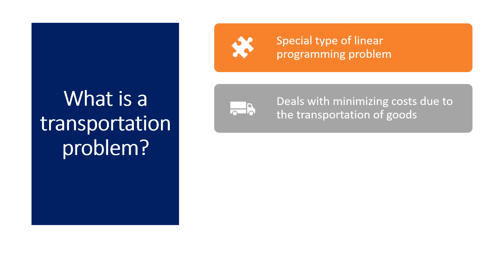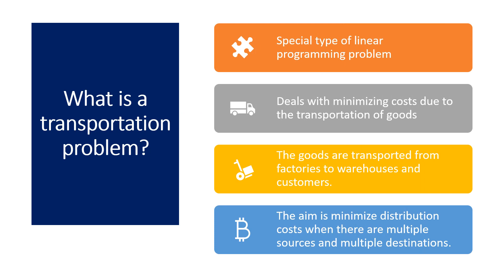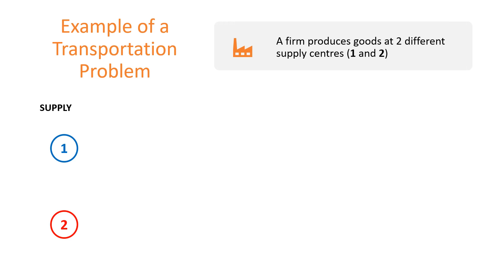With transportation problems, the main focus is on minimizing the cost of transporting goods from some sources to some destination points. The goods are transported from sources, which may be factories, to storage centers such as warehouses, or they can be transported directly to the customers. The overall aim is to minimize the cost of distributing the goods from the supply points to the many destinations.